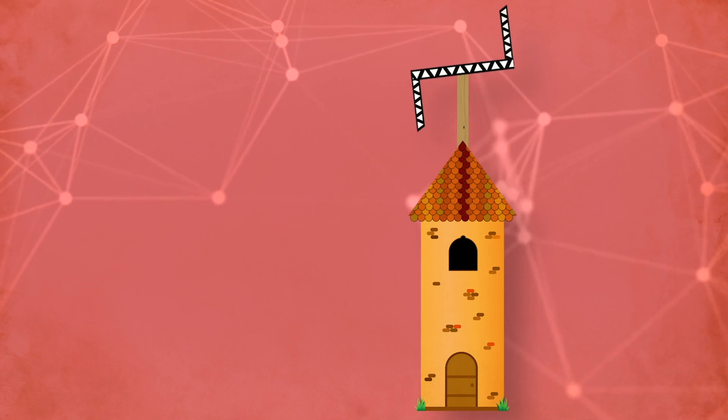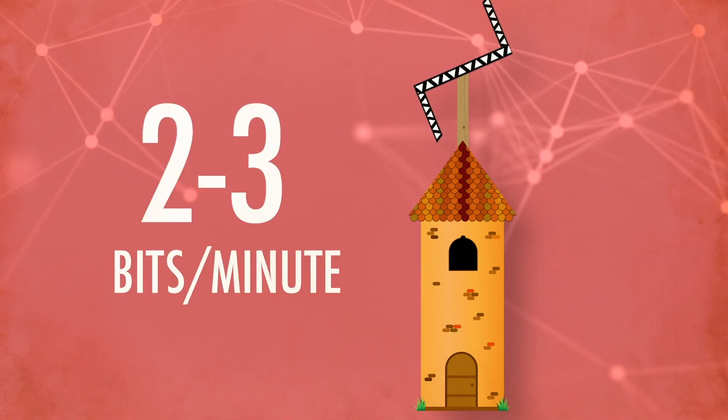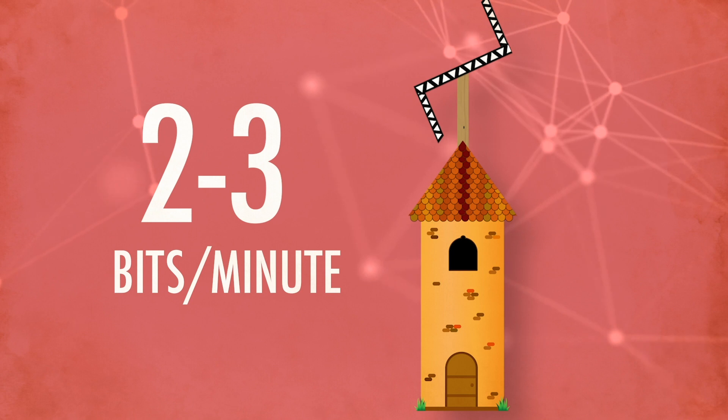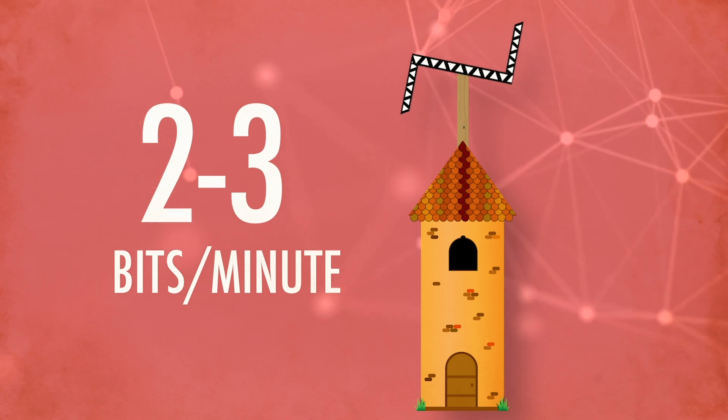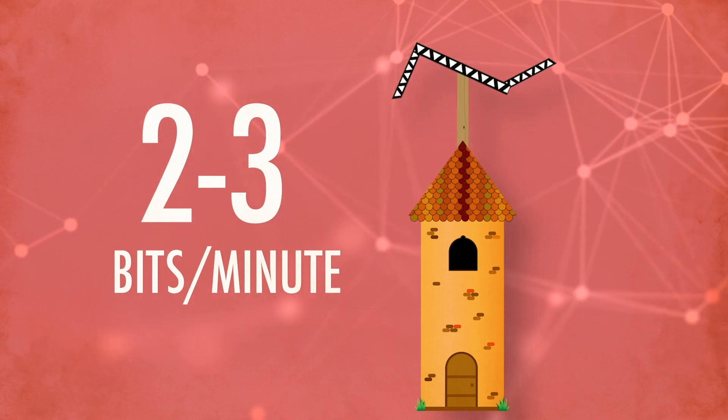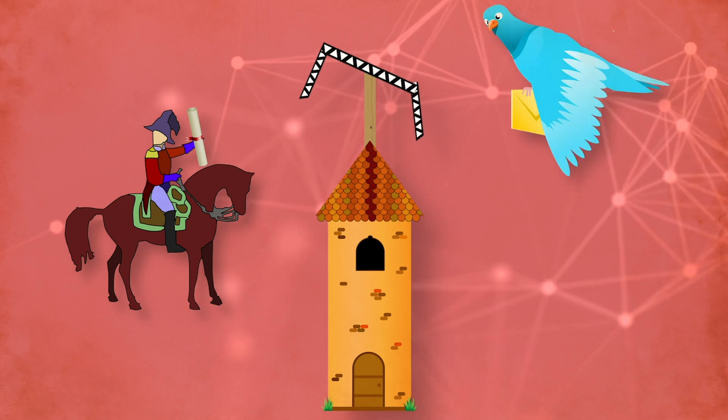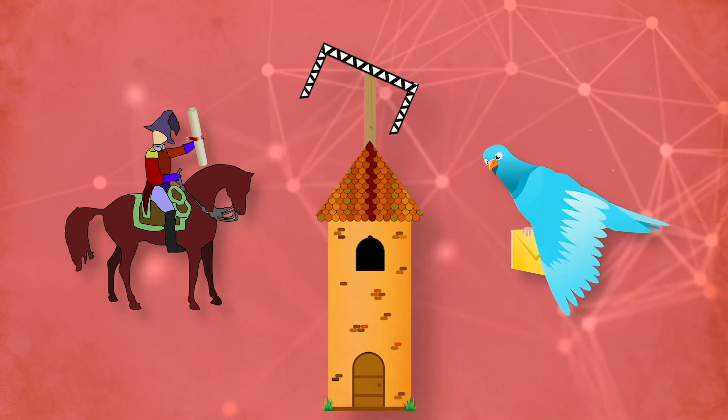At its fastest, Schaap's semaphore telegraph could transmit information at two to three symbols, or bits of information per minute. Nothing compared to today's internet, even if all you have is dial-up, but it was much faster than a person on a horse and more reliable than a pigeon, which was about as good as it got back then.